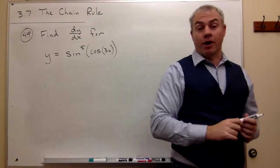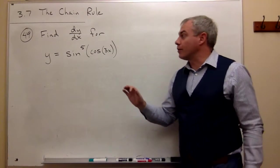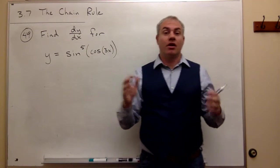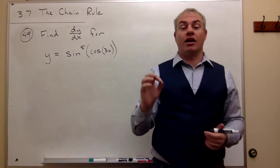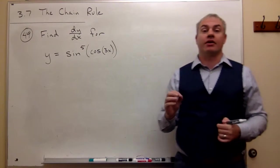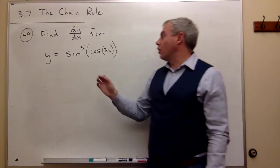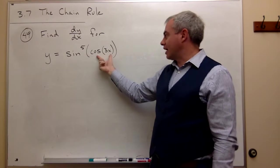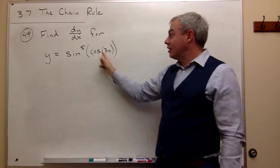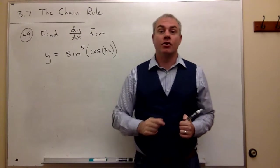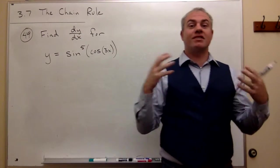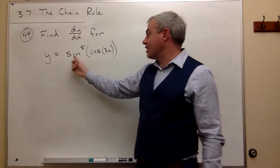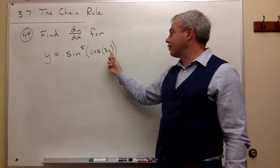This is a chain rule problem, so the very first thing we want to do is say, what's the very outside function — what's the thing that, if I were plugging this into a calculator, would happen last? So what I would do is I would multiply x by 3, cosine it, sine that, and then raise to the fifth. So what I have here is something raised to the fifth power. The something is sine of cosine of 3x.